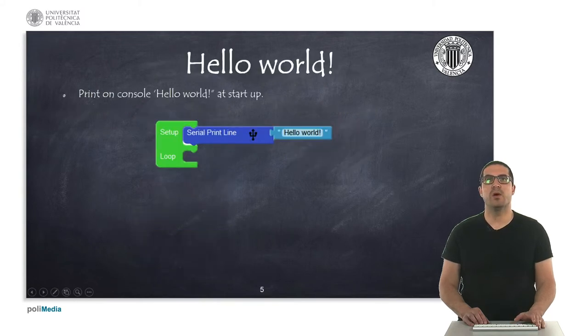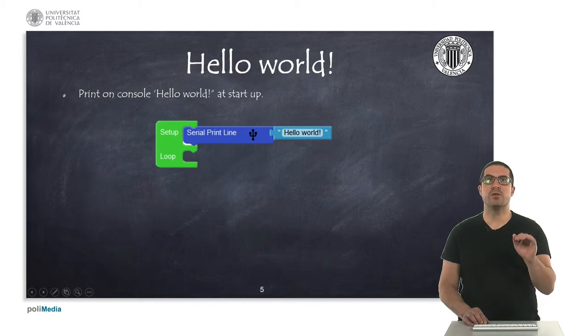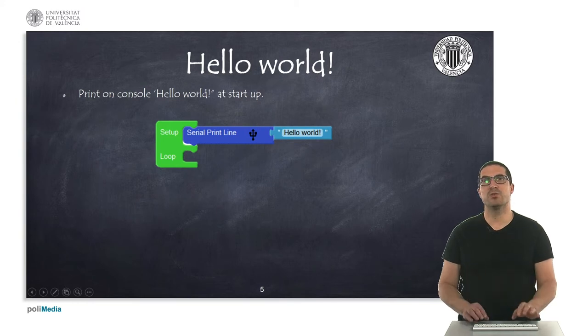Let's start with the hello world. In this case we have the setup loop instruction, and in this exercise we simply print the hello world text on the console at startup. That's why we put this instruction in the setup section. We're using a text instruction and we just type hello world and this will print this line.